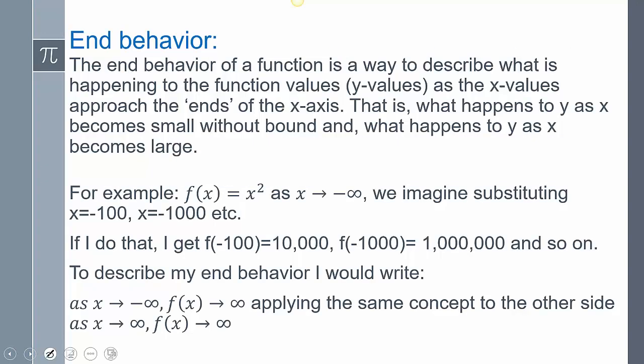The first topic is end behavior. The end behavior of a function is a way for us to describe what is happening to the function — which are our y values — as the x values approach the ends of the graph. Basically, we're asking ourselves: what is y doing when x goes to negative infinity? What is y doing when x goes to positive infinity?